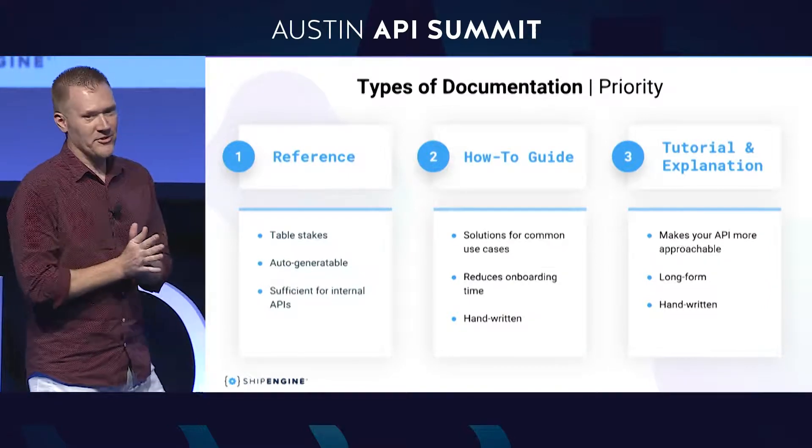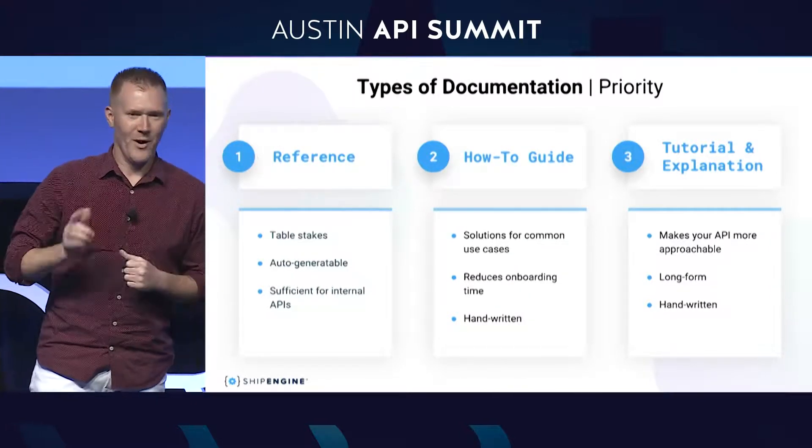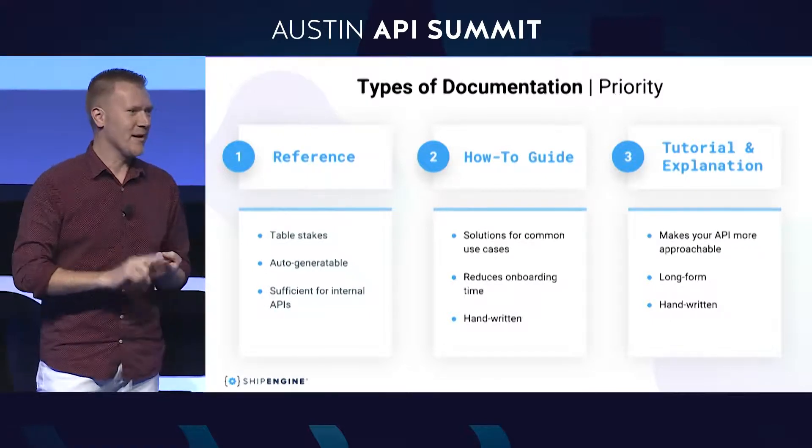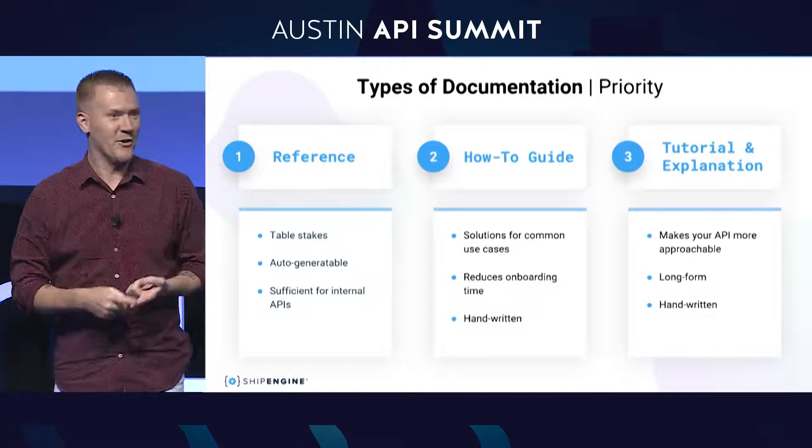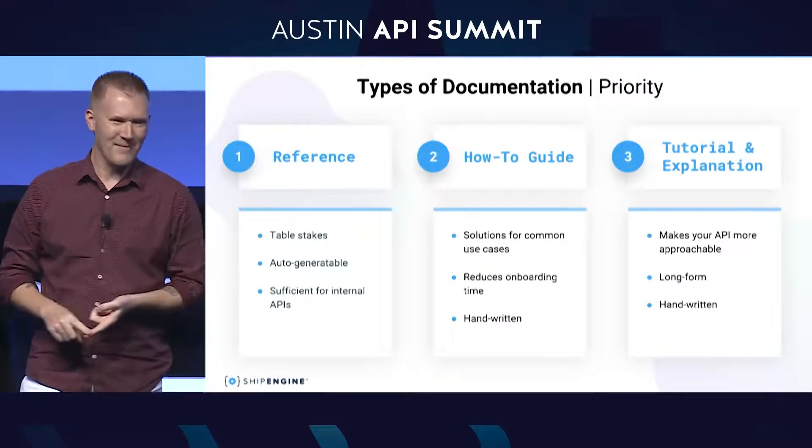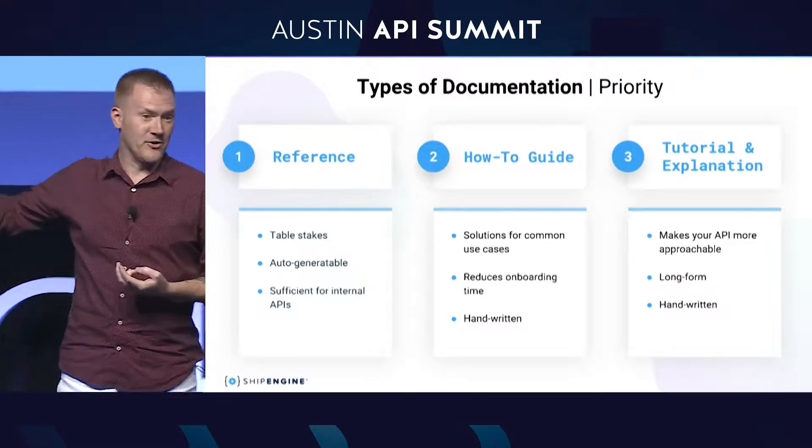It takes time and effort to build all those docs, so where do you start? You start with reference docs, for two reasons. One, it's table stakes — everyone expects you to have reference docs, every developer just expects them, you don't get bonus points for having them. And they're also really easy to create because you can auto-generate them. There are any number of tools you can use to generate reference docs really easily. Finally, if your API is internal only — not something you're selling to customers, just something another department needs to understand — reference docs might be all you need. You don't need how-to guides and tutorials because that other department probably already knows how things work in your company; they just need to know which API endpoints and what data to pass them.